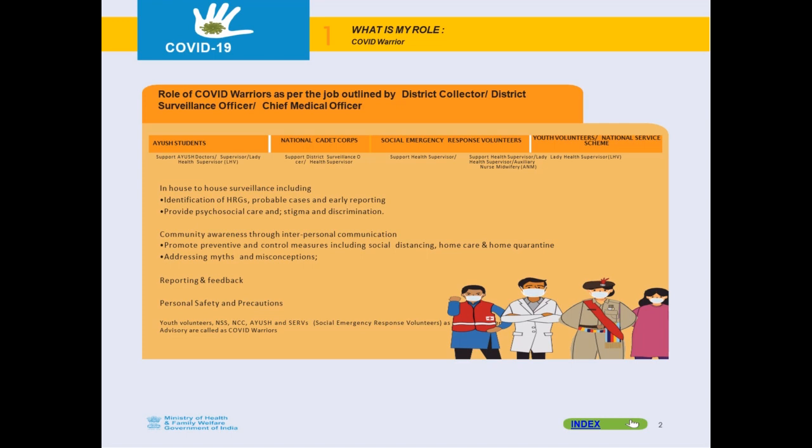What is your role? You have to involve yourself in house-to-house surveillance, which includes identification of high risk groups, probable cases, and early reporting. You need to provide psychosocial care and prevent stigma and discrimination. You also need to involve yourself in community awareness through interpersonal communication, promoting preventive and control measures including social distancing, home care, and home quarantine. Address myths and misconceptions prevailing in the society.